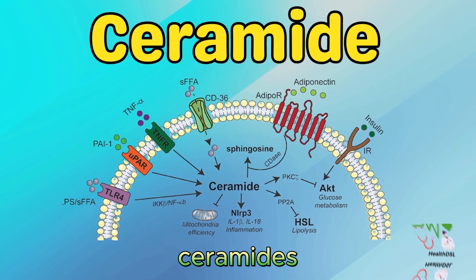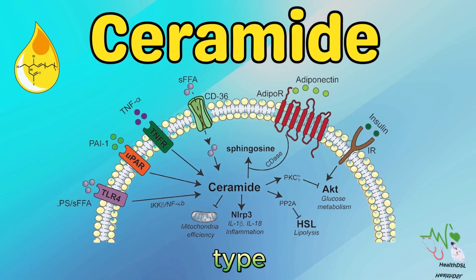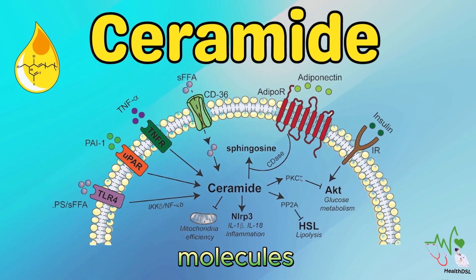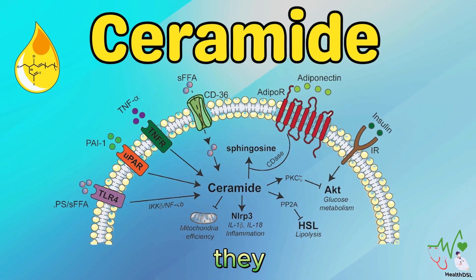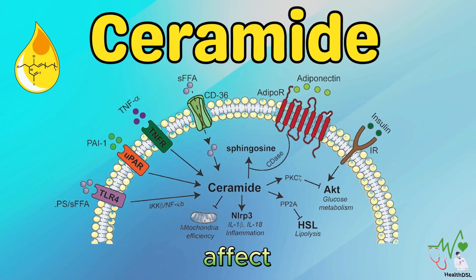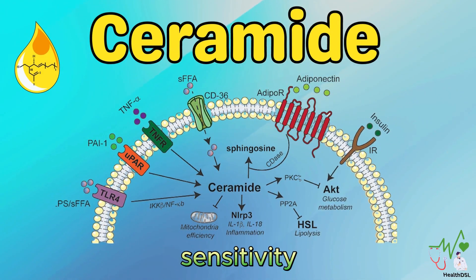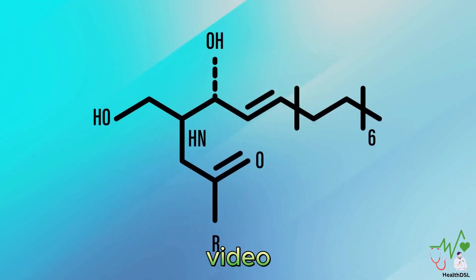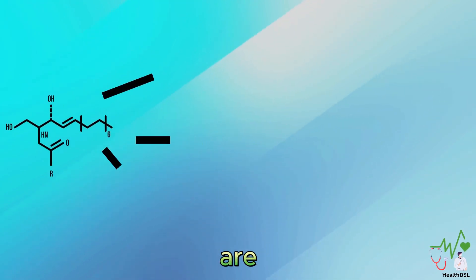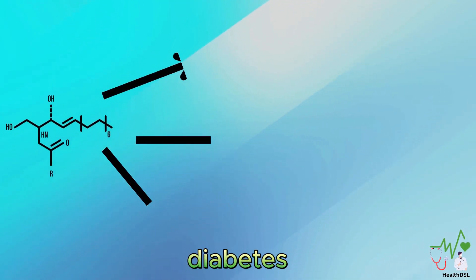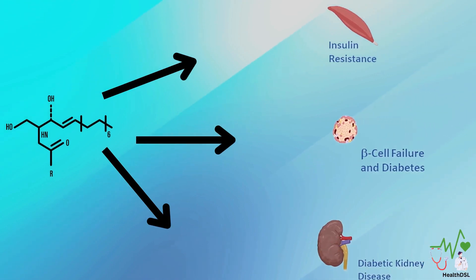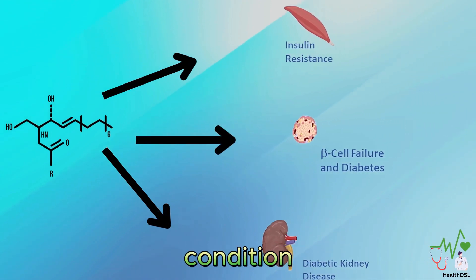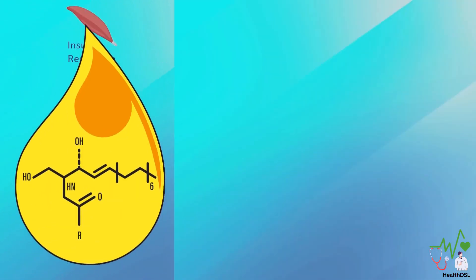You may have heard of ceramides as a type of fat molecules that are good for your skin. But did you know that they can also affect your blood sugar level and insulin sensitivity? In this video, I will explain what ceramides are, how they link to diabetes, and how you can lower them to prevent or manage this condition.